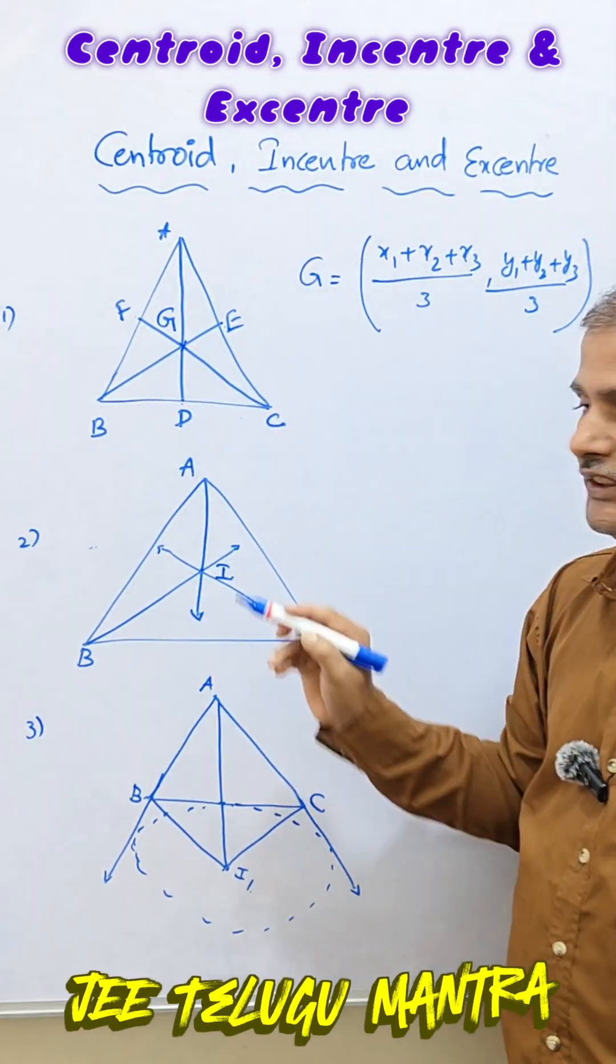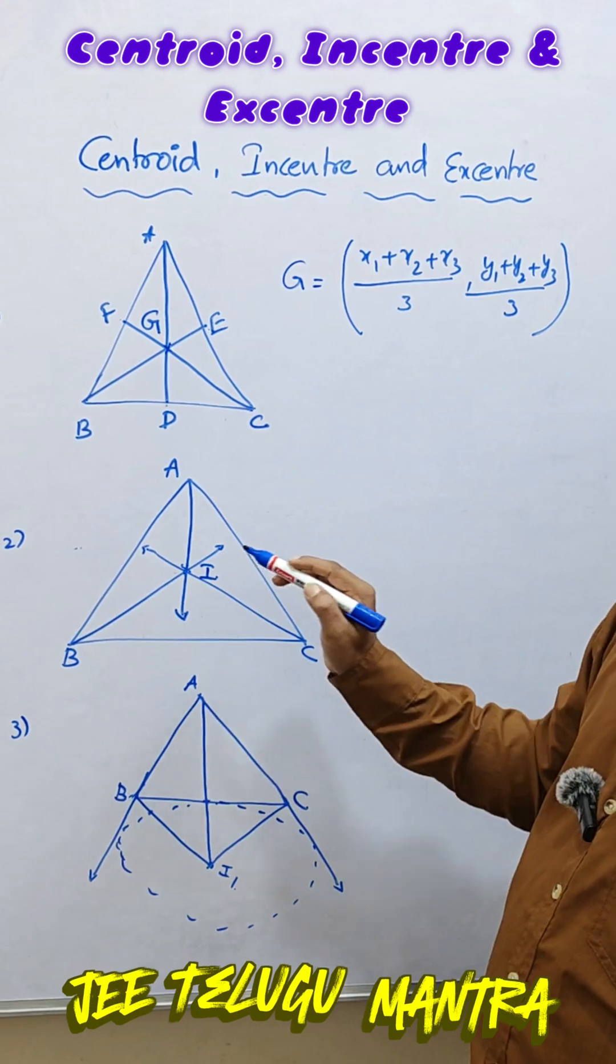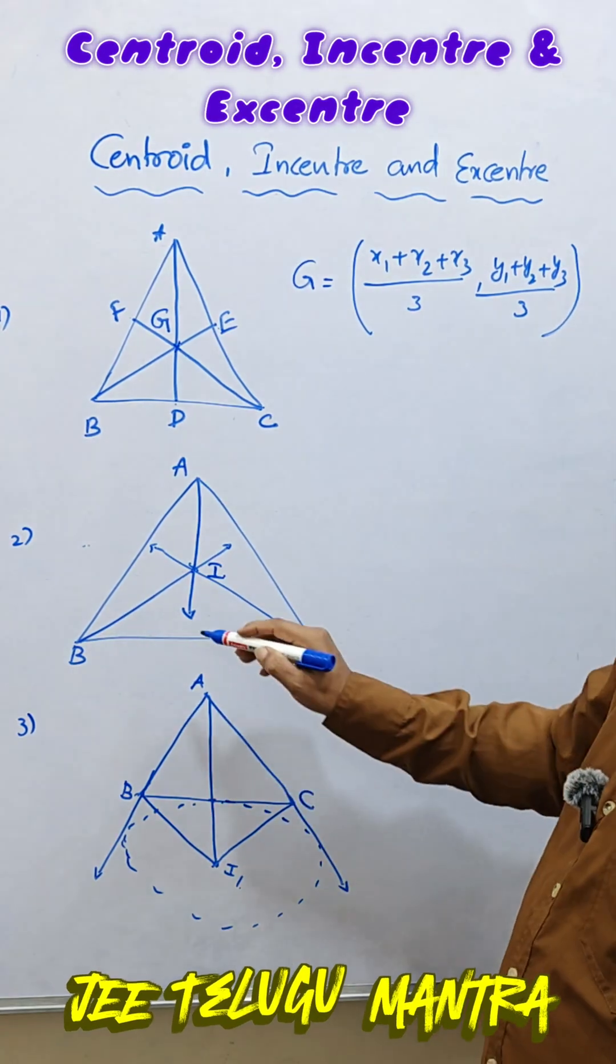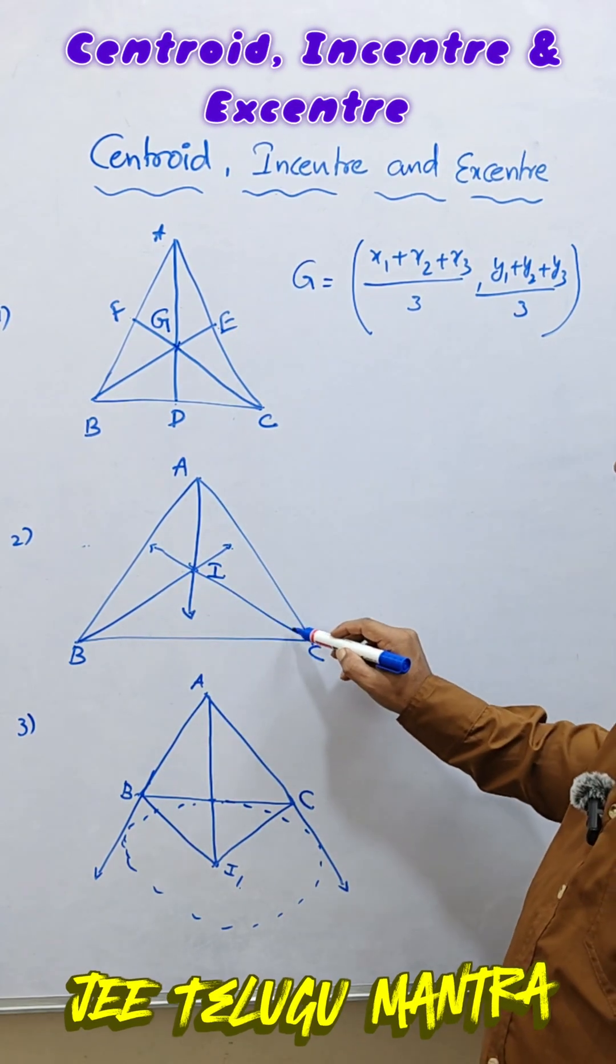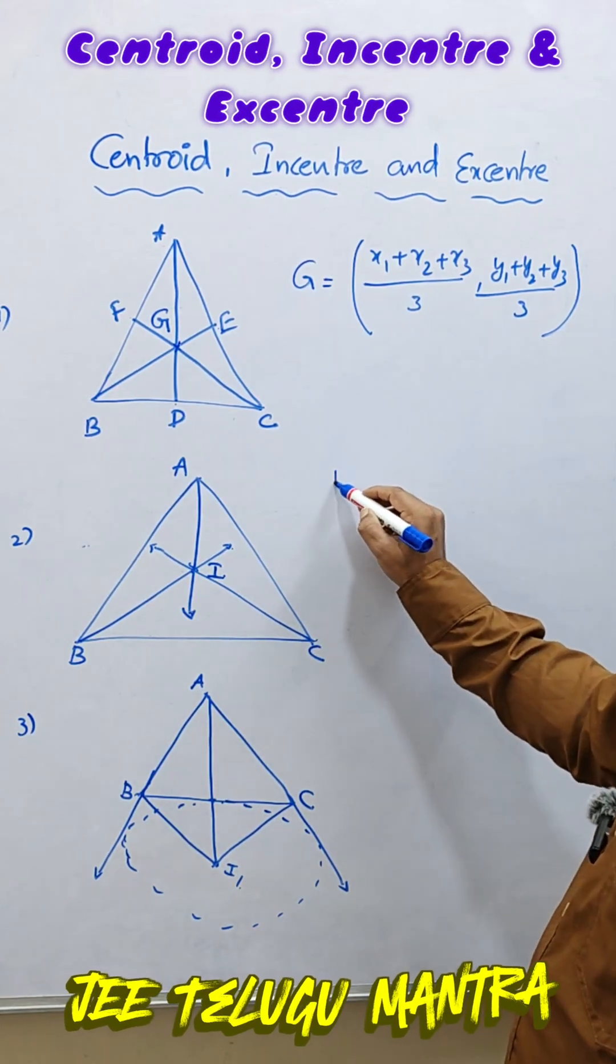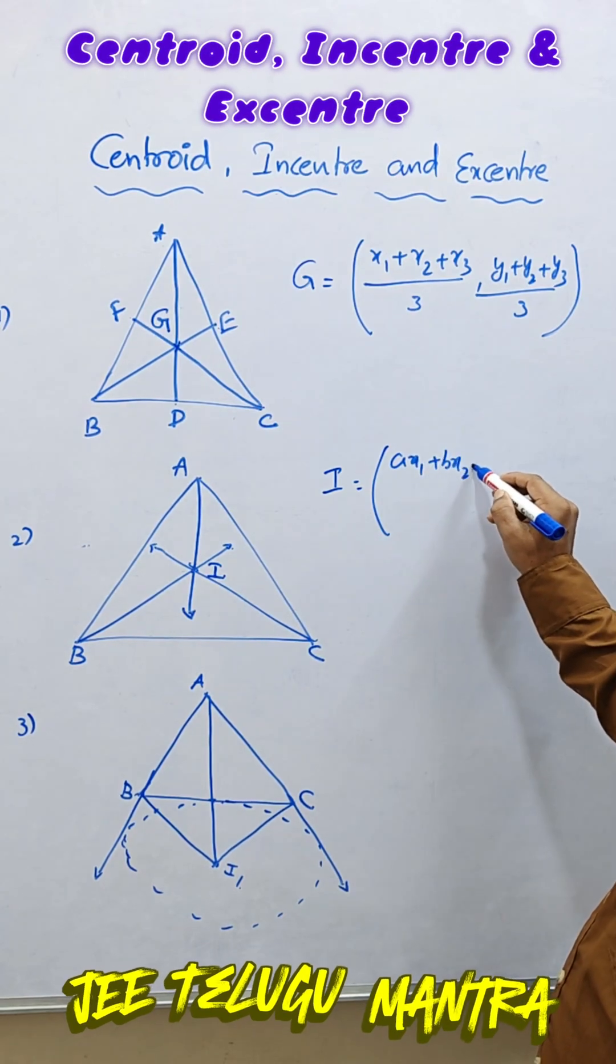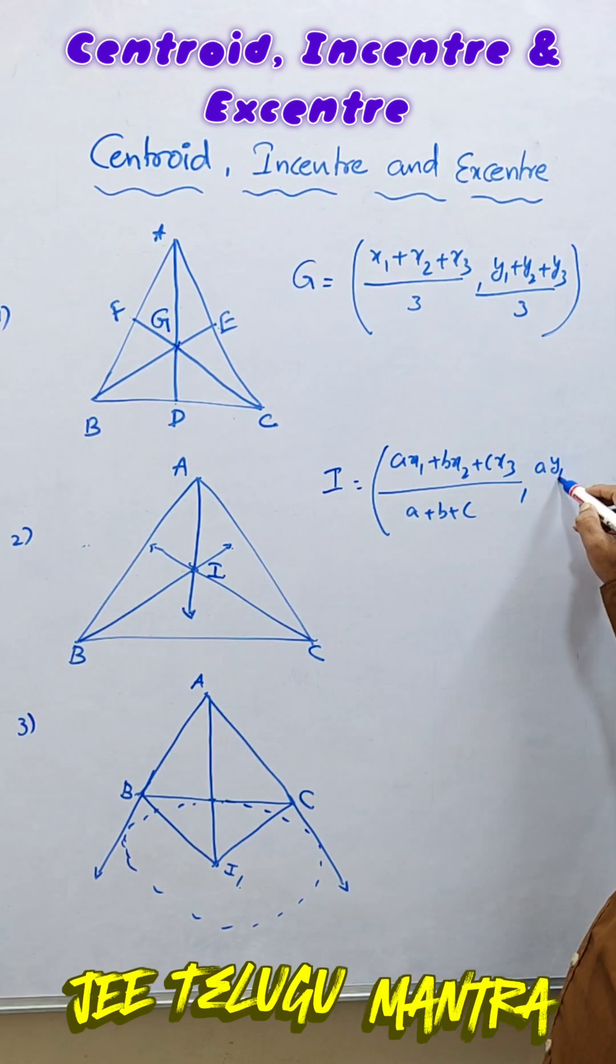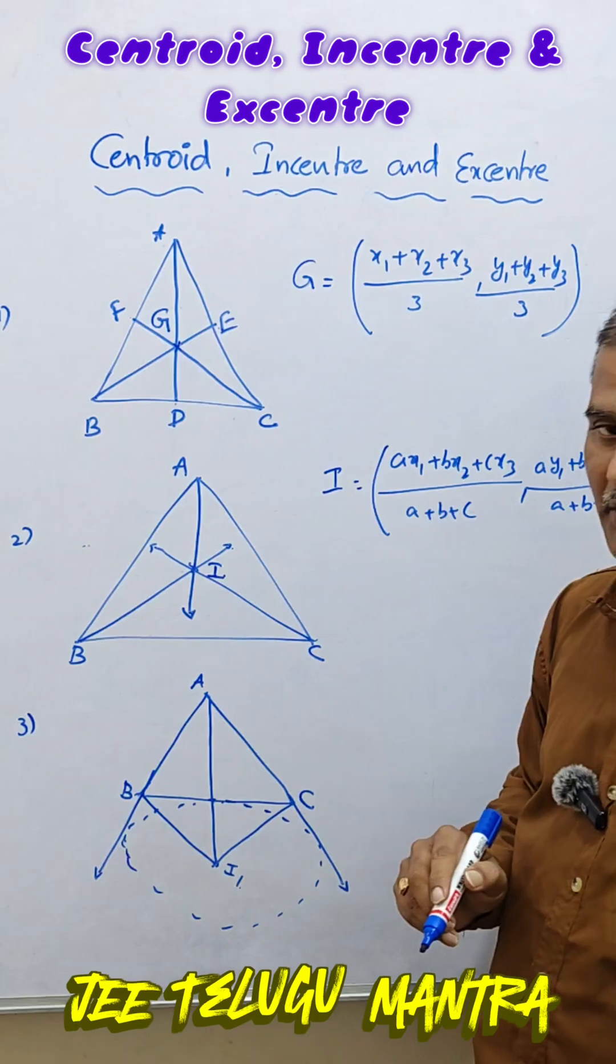And second one is in-centre. I is called in-centre. In-centre is defined as the point of concurrence of internal bisector of triangle ABC. See this is the internal bisector of angle B, this is the internal bisector of angle A and this is the internal bisector of angle C. Now the in-centre I is equal to (Ax1 + Bx2 + Cx3)/(A + B + C) and (Ay1 + By2 + Cy3)/(A + B + C). This is the formula for the in-centre.